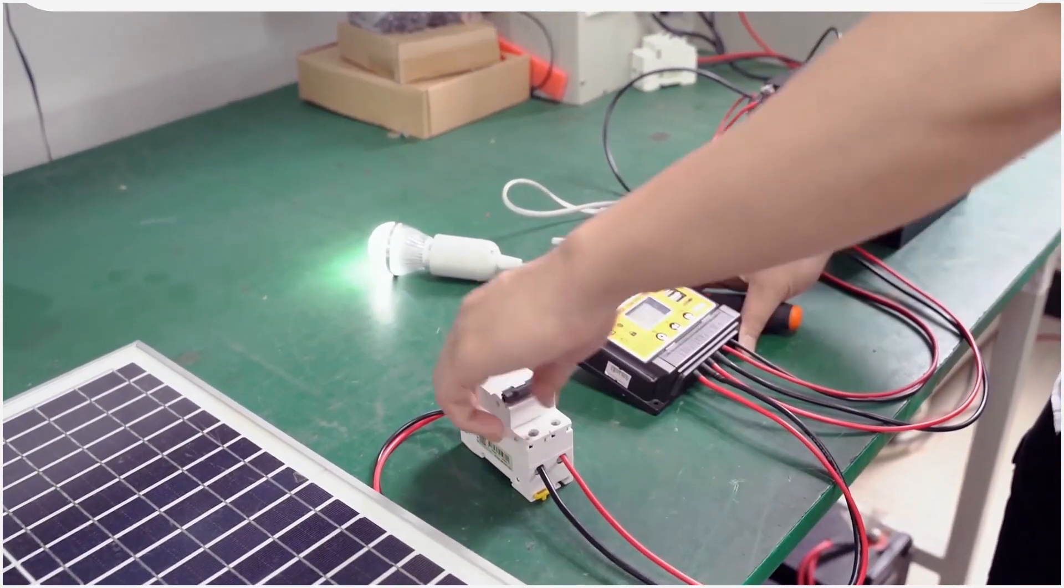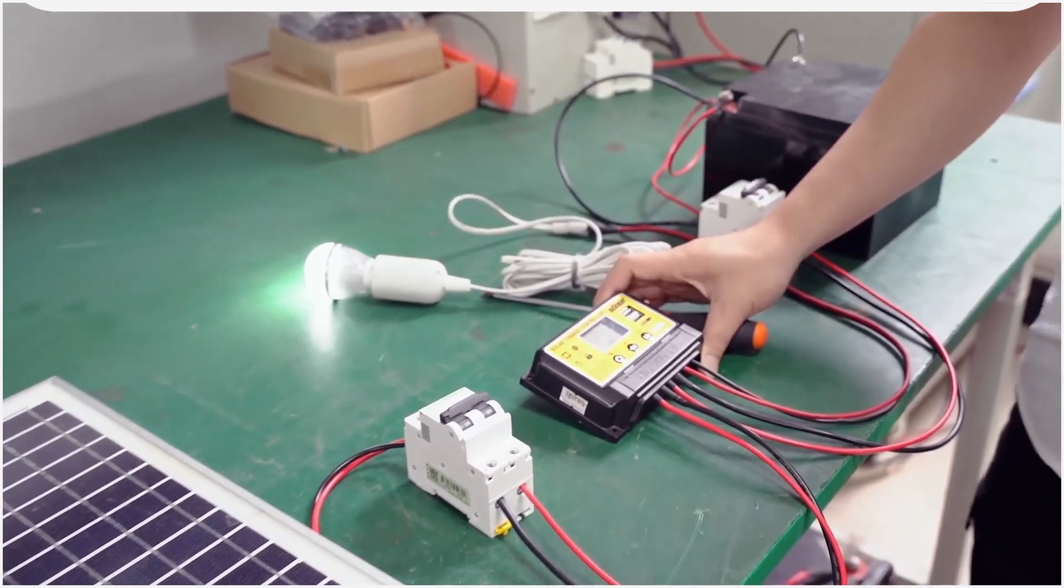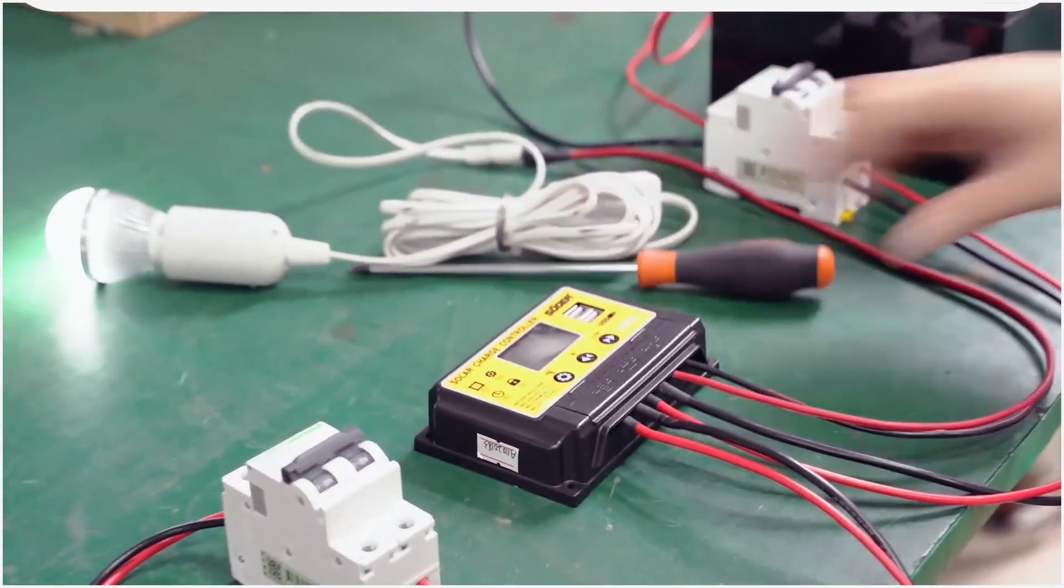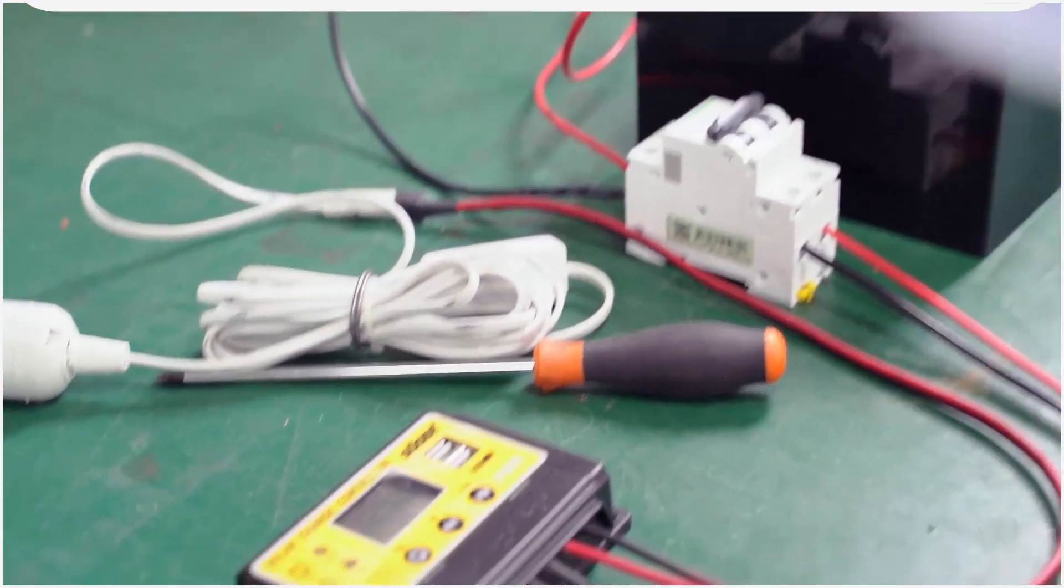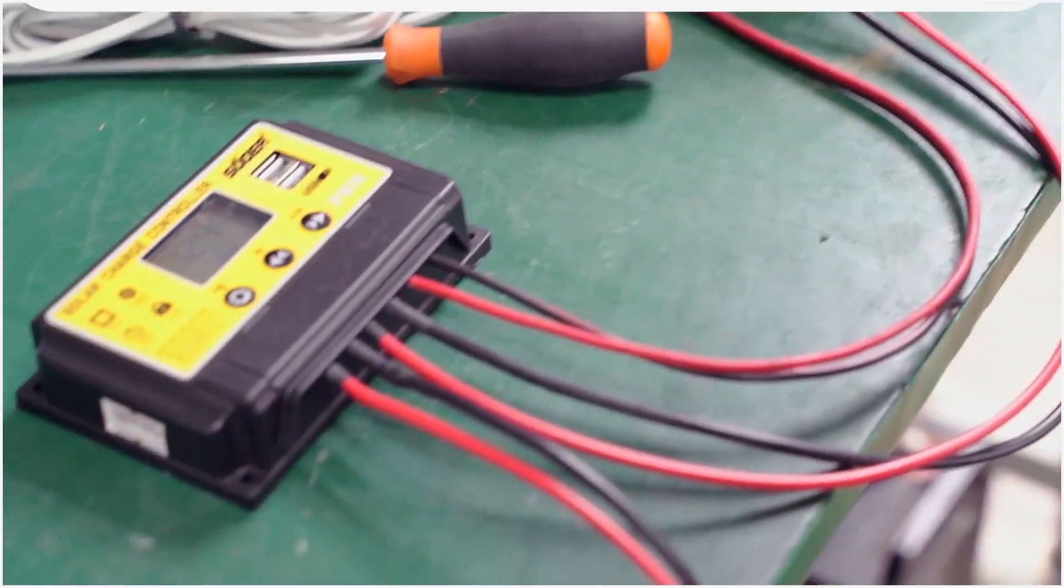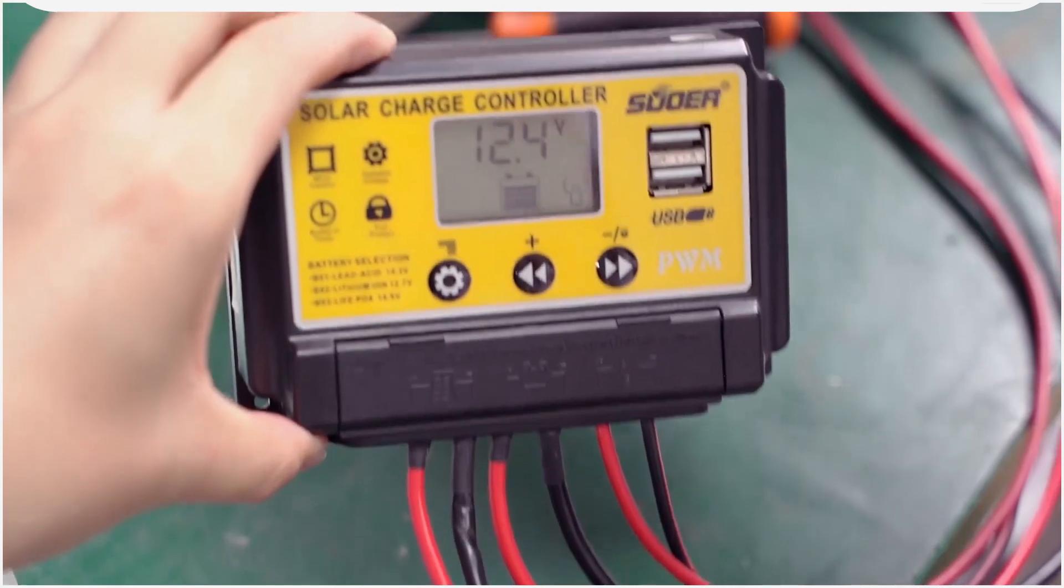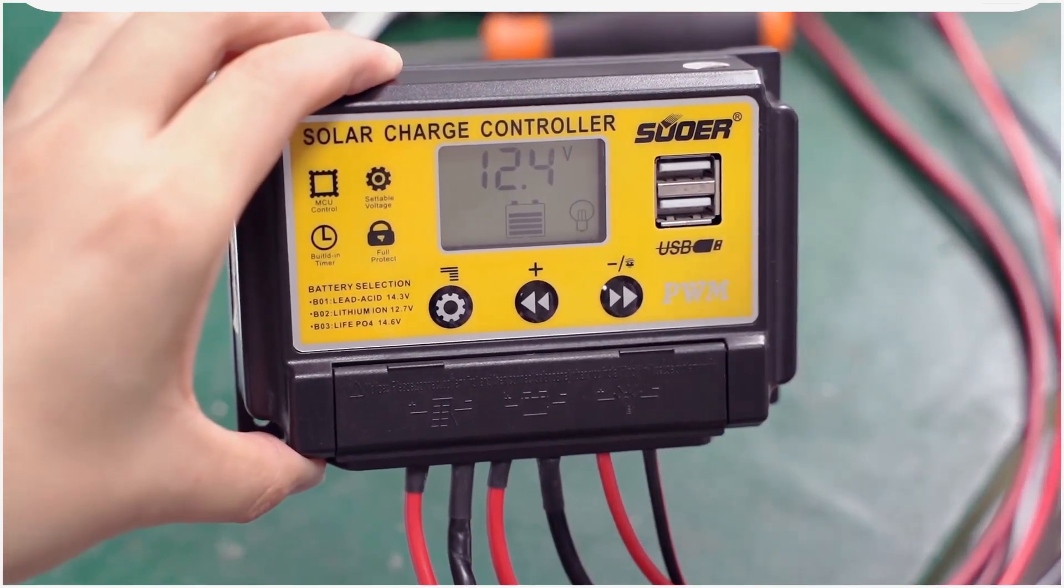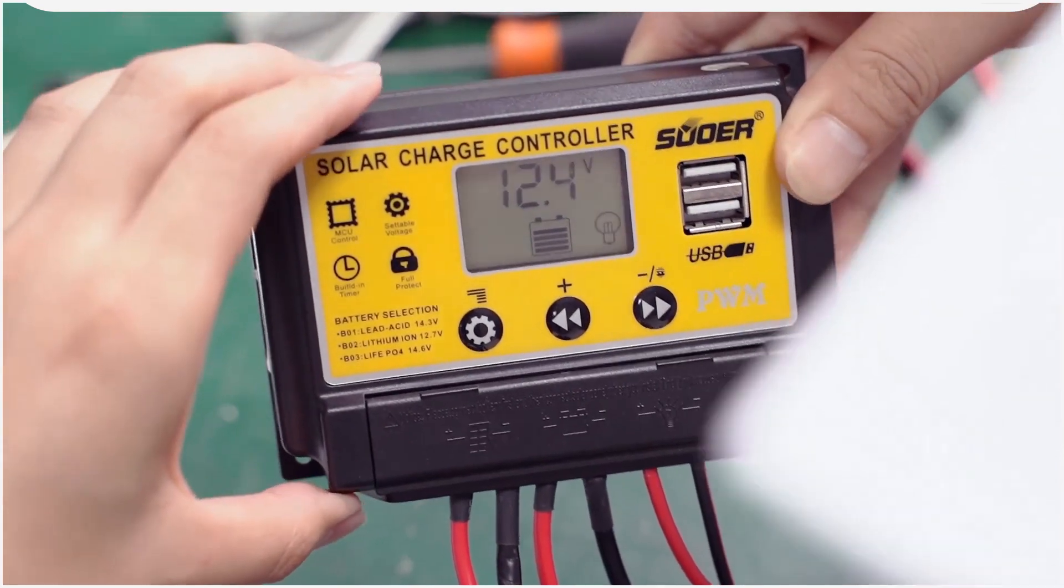Third, we will connect the electrical appliance to DC load. The light will turn on. This controller has an LCD display. Charging and discharging parameters can be fully displayed continuously.